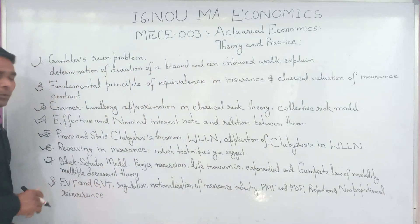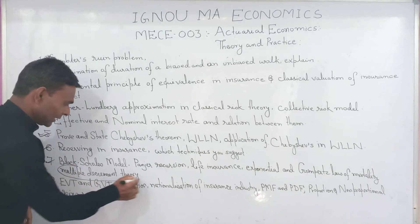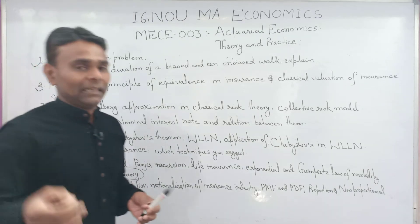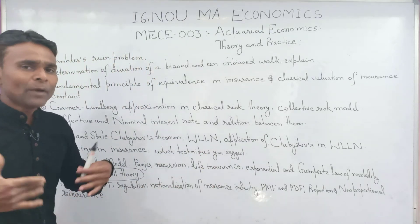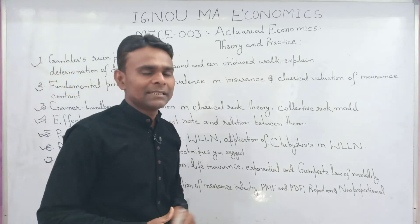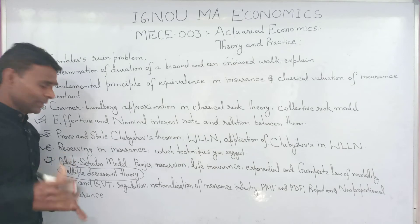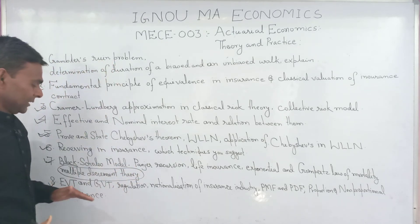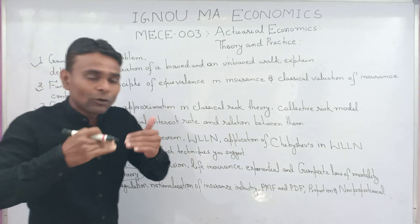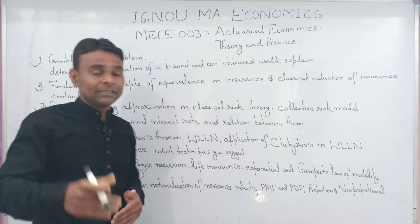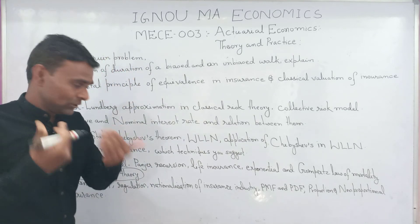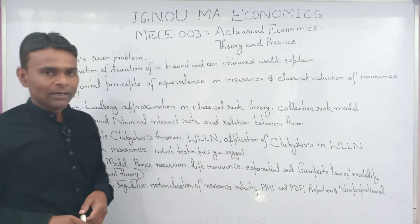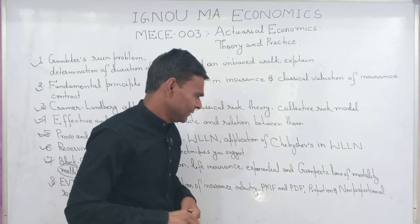Multiple decrement theory is also very important for this year. Differences between EVT and GVT — that is, Extreme Value Theory and Generalized Value Theory — the differences and concepts you need to prepare for this year's Actuarial Economics Theory and Practice examination. Also: regulation of the insurance industry, nationalization of the insurance industry, and PMF and PDF — that is, the Probability Mass Function and Probability Density Function.